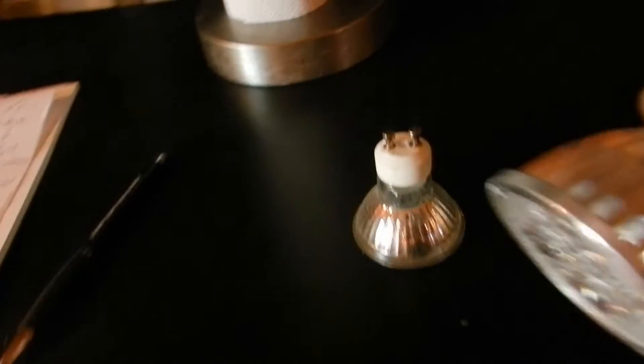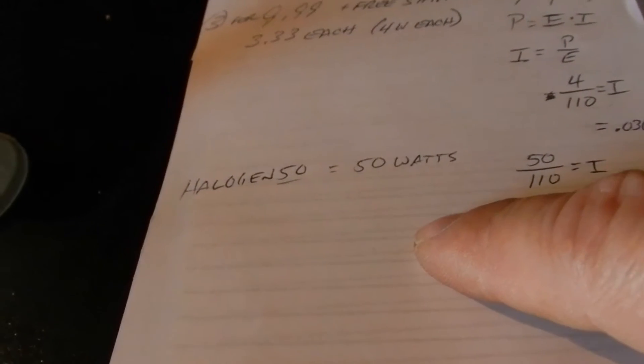The reason being because LED is so expensive. But when you can get three of them for $9.99, that's $3.30 a piece with free shipping. These are 4 watt light bulbs. The ones that came out are 50 watt light bulbs.